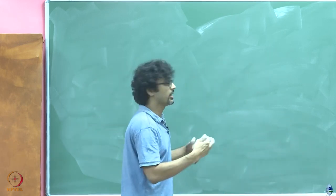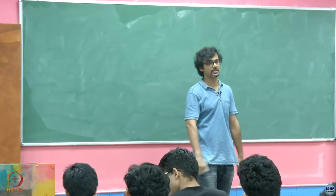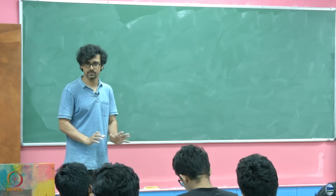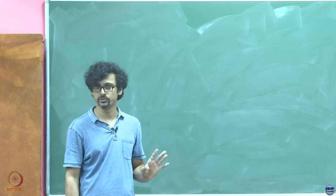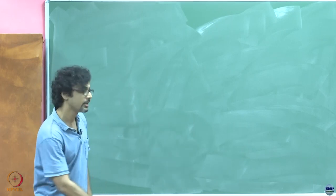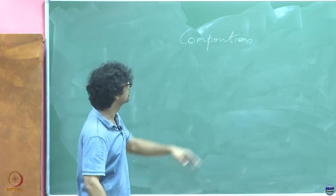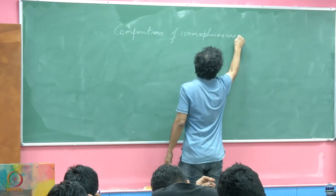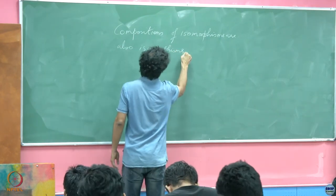If you have both surjection and injection, the vector spaces must be of equal dimensions. In terms of matrices, it must be square matrices of full rank — basically invertible matrices. Now here is a claim: compositions of isomorphisms are also isomorphisms. Suppose you have phi_1 from V to U and phi_2 from U to W, both linear transformations and both isomorphisms.